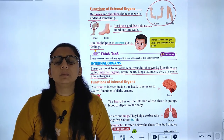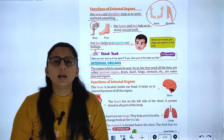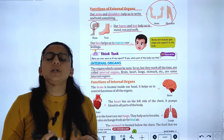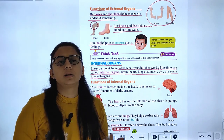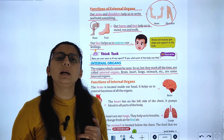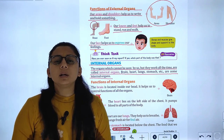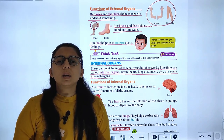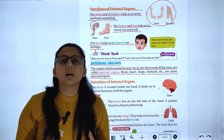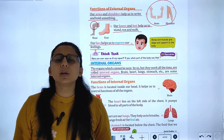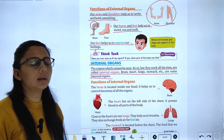Internal organs cannot be seen by us, but they are always working in our body — the heart, lungs, kidneys, and brain are all working all the time. We cannot see them, but we can feel them.